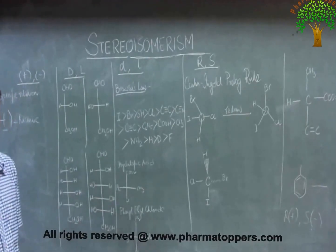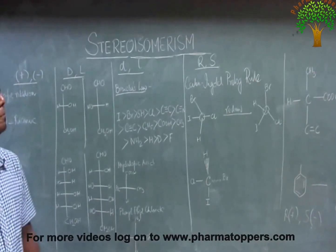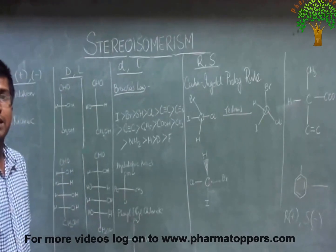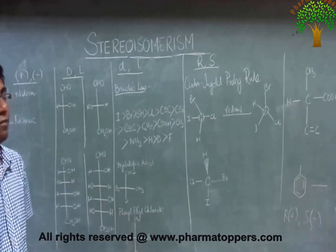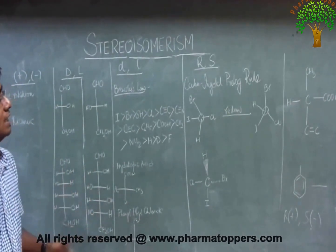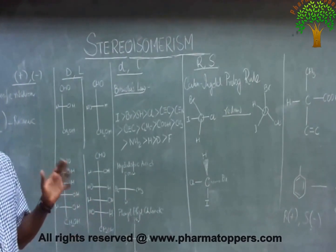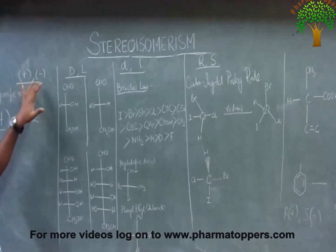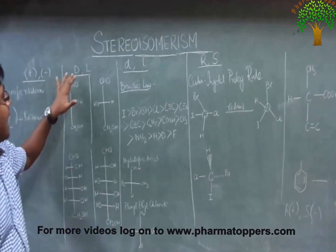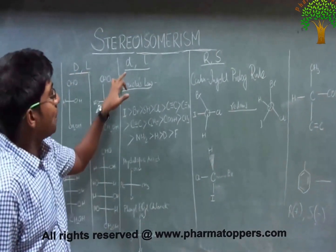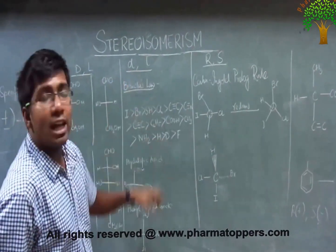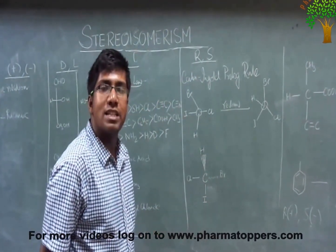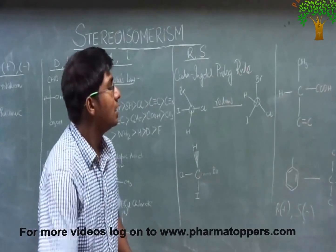Hi friends, welcome to Pharmatopters. This is the first video where we have done the basics of stereoisomers. This video will cover a very important topic that confuses many people: what is the basic difference between plus or minus, capital D and capital L, small d and small l, and R and S — the various types of stereoisomers.